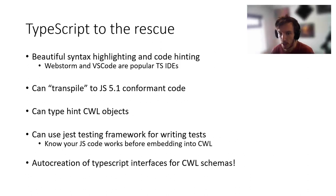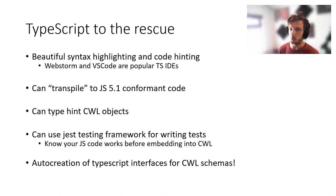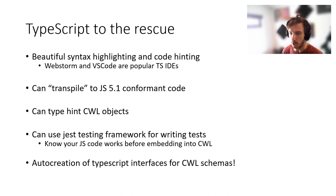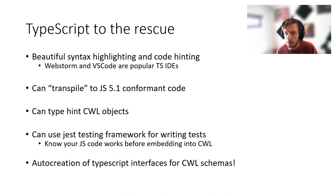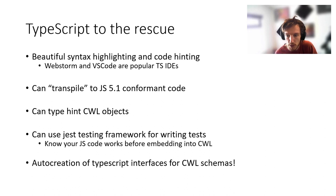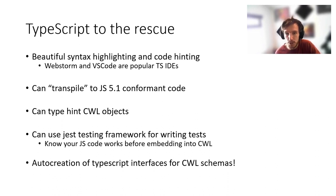This is where TypeScript comes in. TypeScript allows for lovely syntax highlighting and code hinting in IDEs such as WebStorm and VS Code, and most importantly it can transpile into ES5-conformant code. When writing CWL TypeScript expressions, it can autocomplete attributes based on the variable's type class. We can complement our TypeScript code with the Jest framework to unit test functions before integrating them into our tools and workflows. One pretty awesome part of this journey was developing a Python script that takes a CWL schema and creates a complementary TypeScript interface for use in expressions.